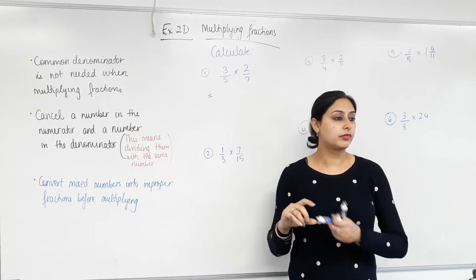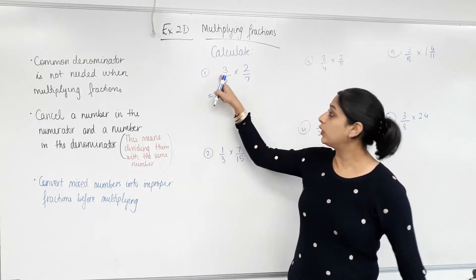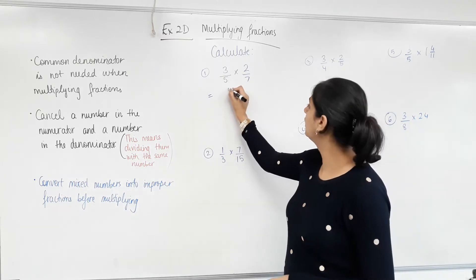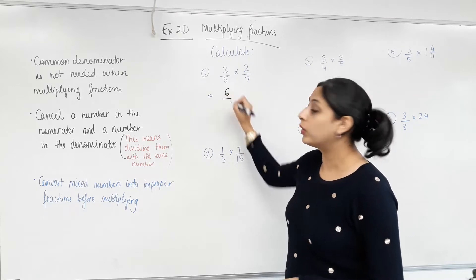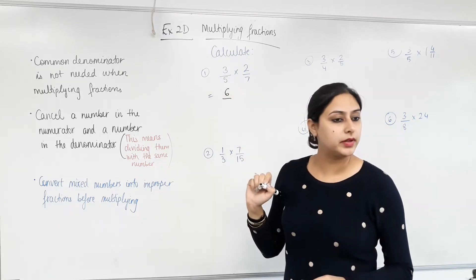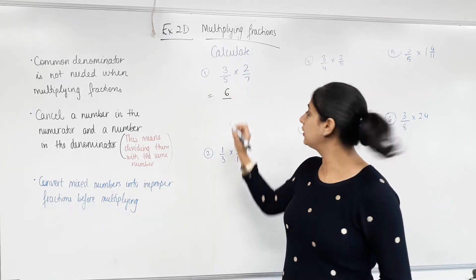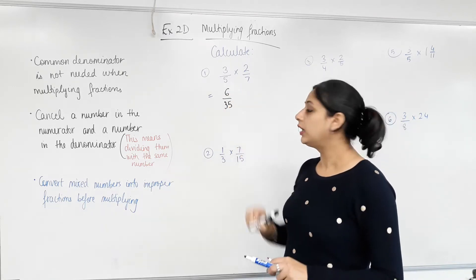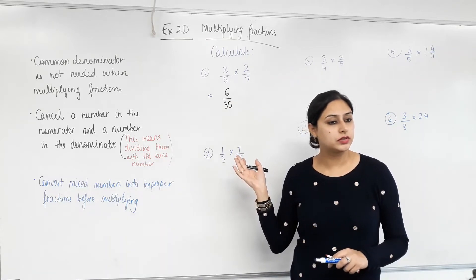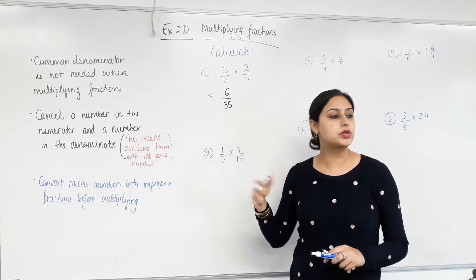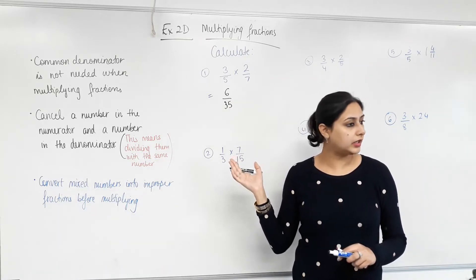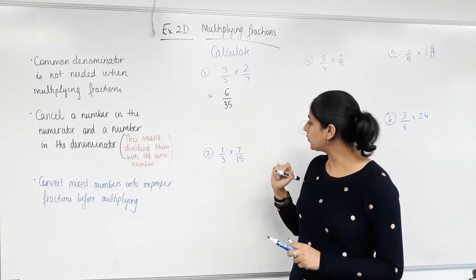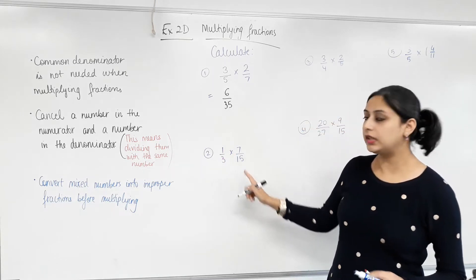What's three times two? Six. What's five times seven? 35. Is it an improper fraction? No. So can we leave it like that? Yes.